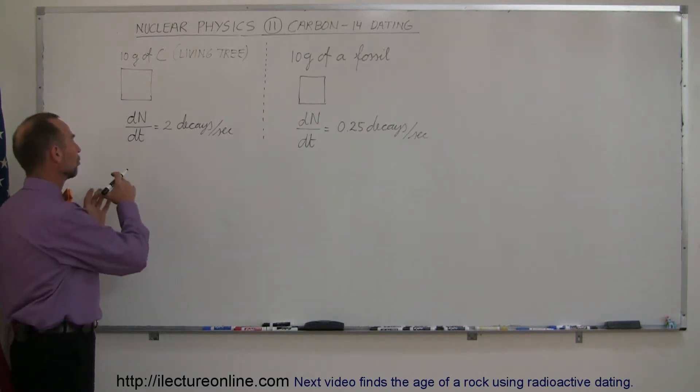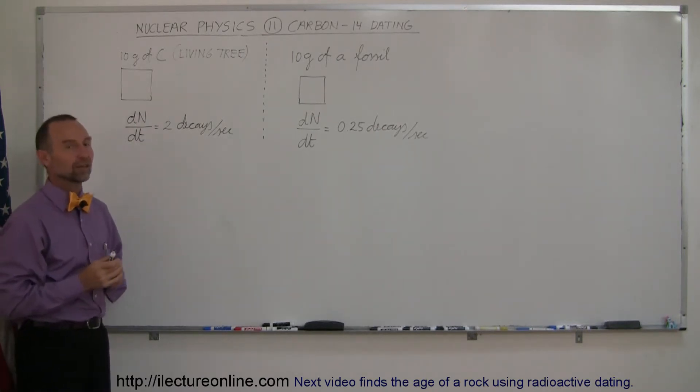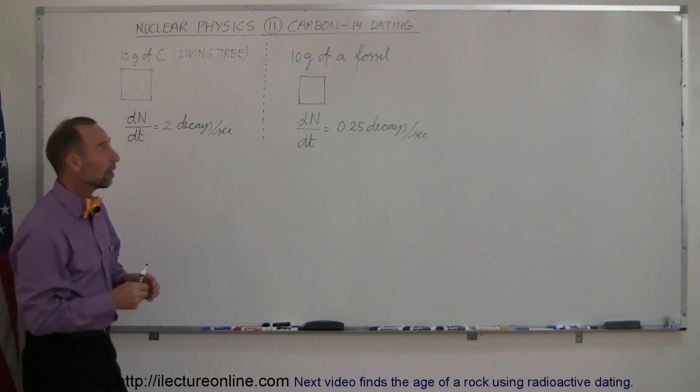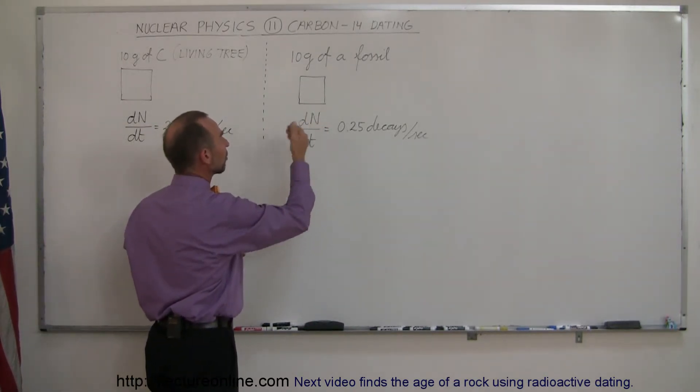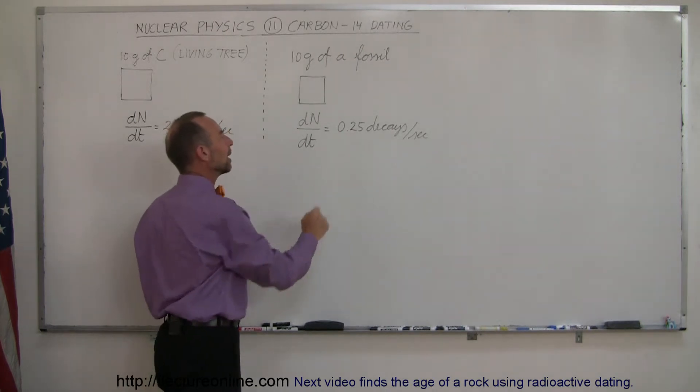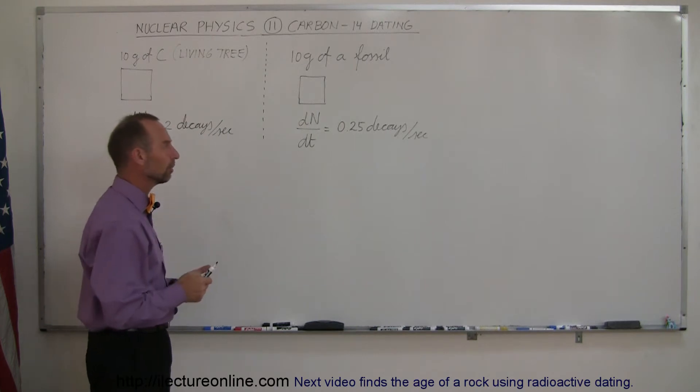So first of all, what we do is we take a 10-gram sample of carbon from, let's say, a living tree. We put it into a machine, we measure the decay rate, and we find that the decay rate is 2 decays per second. Then we go to our fossil, take off a little piece of fossil, 10 grams, put it in the same machine, measure the decay rate, and now the decay rate is only 0.25 decays per second. So, how old is the fossil?